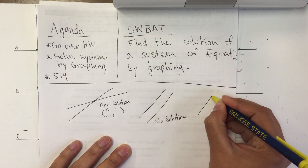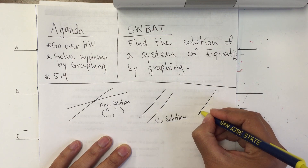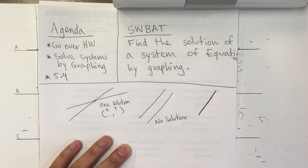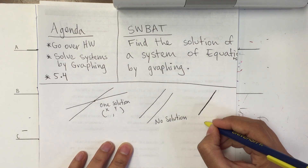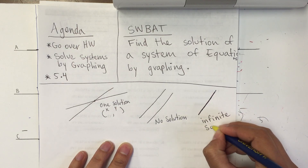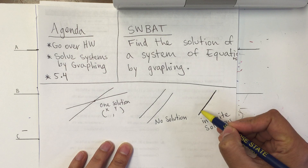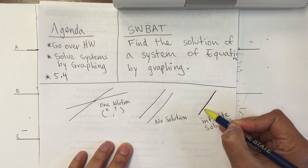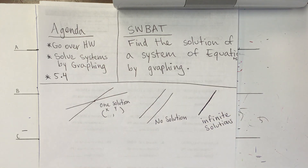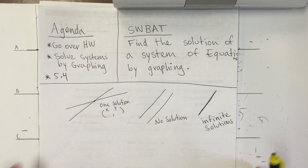And finally we have a set where you have a line, and then you might have another line that — even though they might be different equations — they are going to overlap, and so we call that infinite solutions. It means that if I choose any point, it meets with the point of the other equation. If I choose a different point, the first equation meets with the point of the second equation. So: one solution, no solution, or infinite solutions. Take a minute to take notes on that.